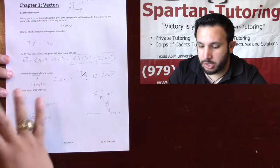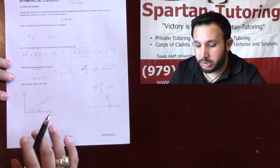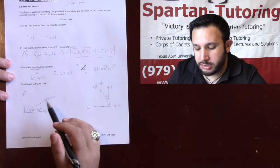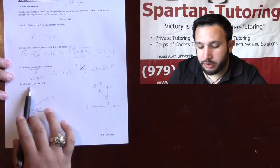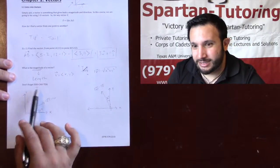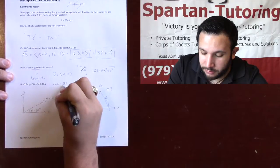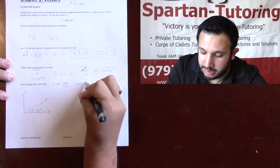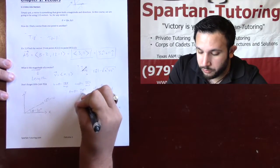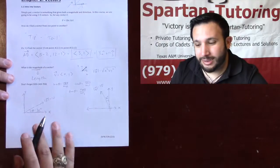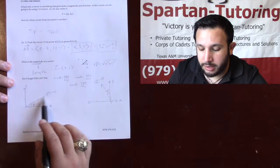Let's make sure we have a solid foundation of what vectors are before we start doing vector algebra. The last thing I want to cover is how to find the components of a vector when you're given a magnitude and an angle. Definitely remember SOHCAHTOA: sine θ = opposite over hypotenuse, cosine θ = adjacent over hypotenuse, and tangent θ = opposite over adjacent.